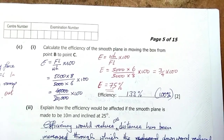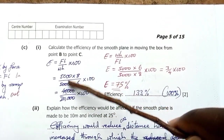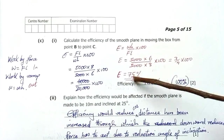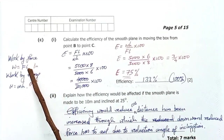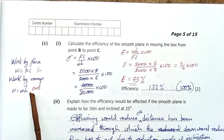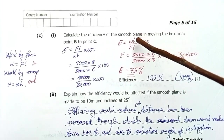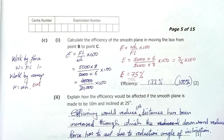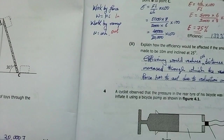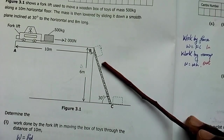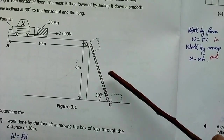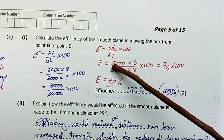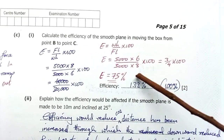Part c: calculate the efficiency of the smooth plane in moving the box from B to C. I realized I had swapped values initially, giving 133%, so the correct answer is in red. Work done by the force is work input; work done by the ramp is work output. The force is the weight of the box in both cases but acting over different path lengths — six meters versus eight meters. The answer comes out at 75%.